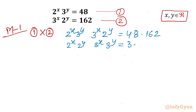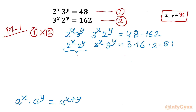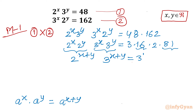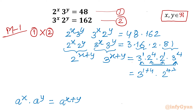I can write 48 as 3 times 16, and 162 as 2 times 81. Now applying the exponent property a^x times a^y equals a^(x+y), the LHS becomes 2^(x+y) times 3^(x+y). On the RHS, 16 is 2^4 and 81 is 3^4, so we get 3^1 · 2^4 · 2^1 · 3^4, which simplifies to 2^5 times 3^5.